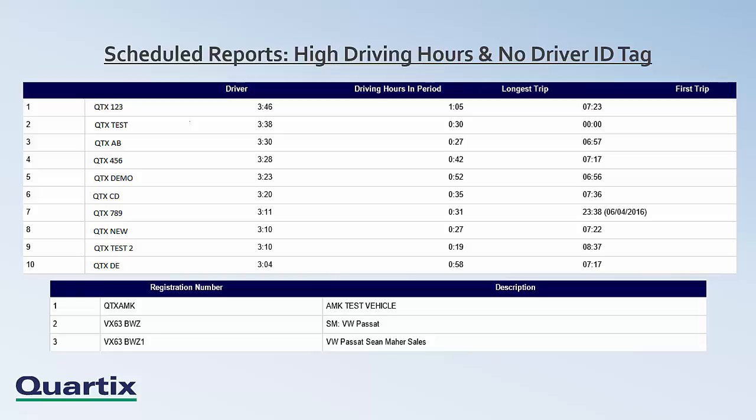Lastly is the no driver tag report. This report is specifically for those customers using our driver ID system. It lists any vehicle that has been driven without an ID tag recorded. The example report lists all vehicles without ID during a 24-hour period. Most drivers may forget to use their tags once in a while; however, this report can highlight if this is happening too regularly. If a driver isn't using a tag for another reason — for example if it's been lost — you will be able to find out and resolve the situation quickly.